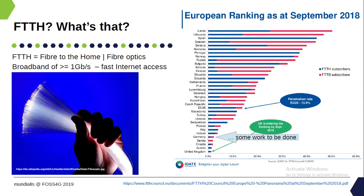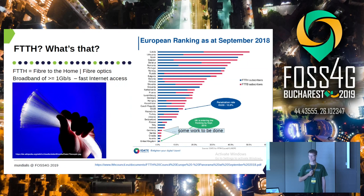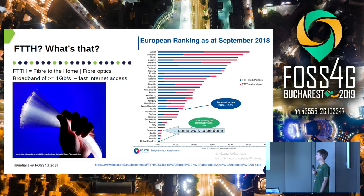Everybody wants to have fast internet, and fast internet is not yet everywhere. When we talk about fast internet here, that is like one gigabit per second, and in many parts of the world it is not like that. You can see the ranking of Germany among European countries — let's say there is some room for improvement.